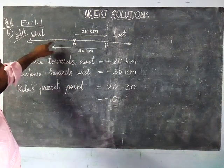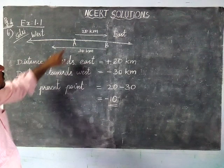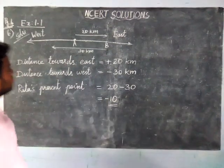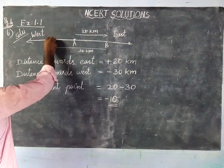So now present point of Ritu is minus 10. He will be at minus 10 point.